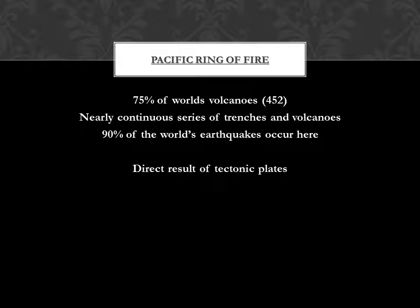Real quick — talking about Oceania, 75% of the world's volcanoes are in Oceania; that's 452 volcanoes. That means a near-continuous line or series of volcanoes and deep, deep trenches in the ocean. 90% of the world's earthquakes are going to happen in the Ring of Fire in Oceania, and this is a direct result of tectonic plates rubbing against each other.